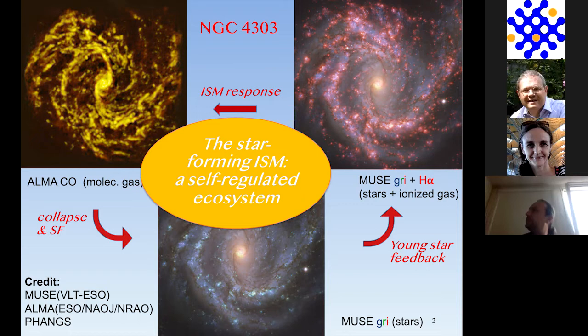This includes the different phases of the interstellar medium. There are, of course, different phases, and you've heard about how star formation develops. This is the molecular phase from a recent release from PHANGS, which Annie mentioned from last week. Here's the CO map—that's where gas collapses and makes stars—and then it's the feedback from these stars that, in response of the interstellar medium, really creates this cycle.